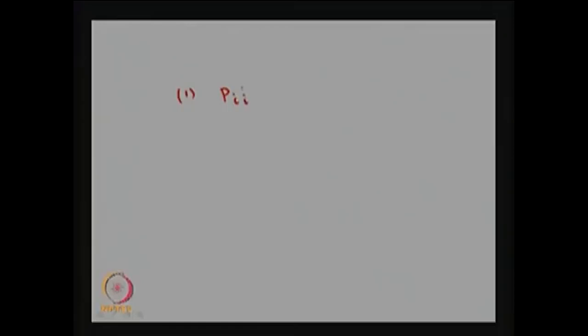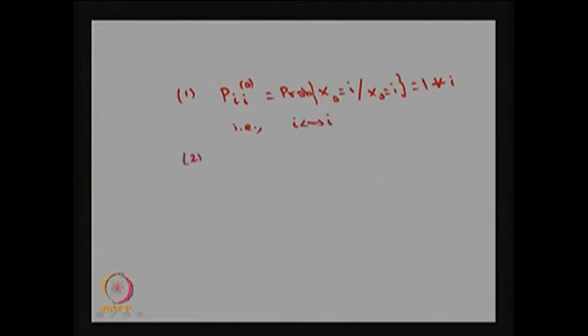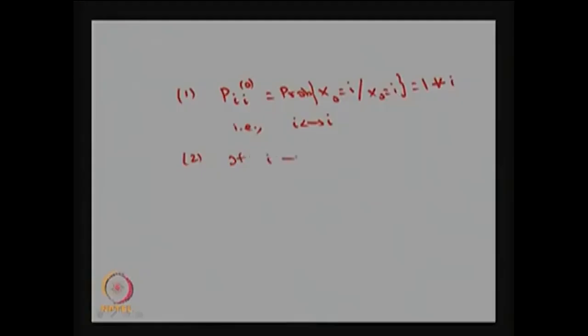Since I use the concept of accessible to define communicate, it is going to satisfy a few properties. The first property: any state communicates with itself, since P_{ii}^{(0)}, which is the probability that X0 = i given X0 = i, equals 1 for all i. The second property: if state i communicates with state j then state j communicates with state i also — that is, communication satisfies the symmetric property.